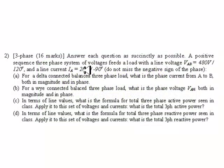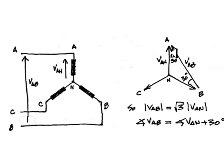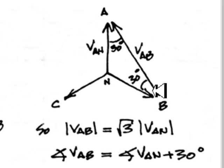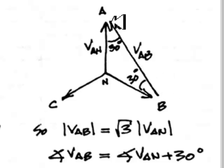But before even attempting it, let's have a preamble. In class, we saw that in a Y-connected load, there was a relationship between the line voltage and the phase voltage. The line voltage VAB and the voltage between phase A and the neutral was given by a phase diagram. We saw in class that the line voltage was root 3 times the RMS value of the phase-to-neutral voltage. Not only that, the phase of this line voltage is 30 degrees ahead of the neutral-to-phase voltage VAN.